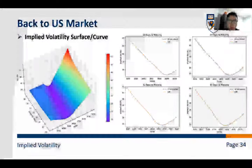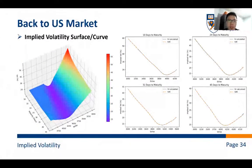So, okay, the next part. Now, let's move back to US market. Following the previous method, we create implied volatility surface and curves for SP500 options. It can be seen that the calculated implied volatility is basically consistent with the implied volatility data given by the market, which is represented by IVM in the plots. And we can observe volatility smile from the figures.